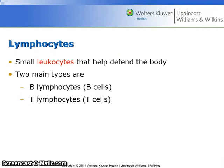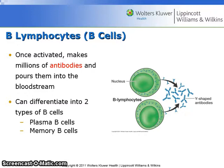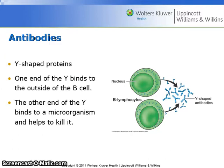Lymphocytes are small leukocytes or white blood cells that help defend the body. The two main types are B cells and T cells. B cells, once activated, make millions of antibodies and pour them into the bloodstream. They can differentiate into two types of B cells: plasma cells and memory cells. Antibodies are Y-shaped proteins. One end of the Y binds to the outside of the B cell while the other end binds to the microorganism and helps to kill it.